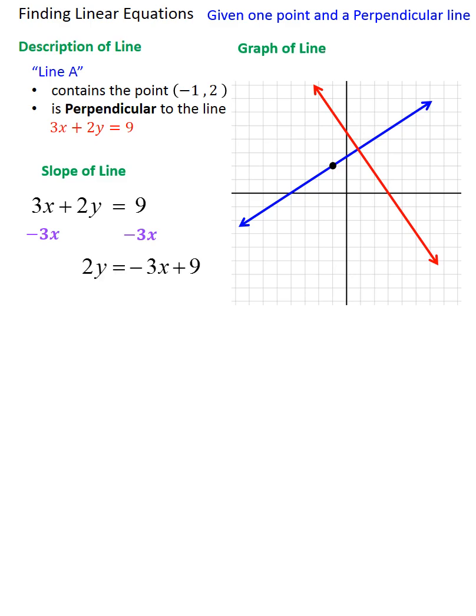What you're witnessing now is the algebra needed to isolate the y. If you need to pause the video and look at the particulars, now would be an okay time. So what this algebra shows is that the perpendicular or red line has a slope of -3/2.